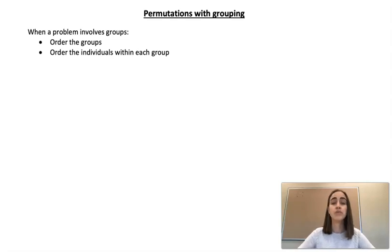In this video I want to have a look at problems involving permutations where we have groups within our problem. So when we have a situation like that, we're going to look at the number of different ways the groups can be arranged, and then we're going to have a look at how many ways we can arrange the individuals within each group, and then we multiply our answers. So let's go through a few examples.